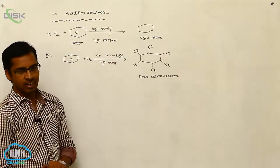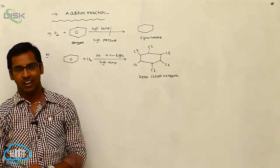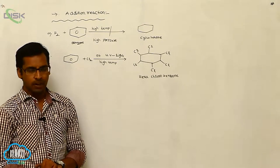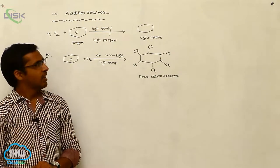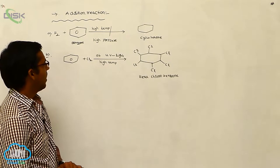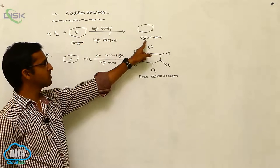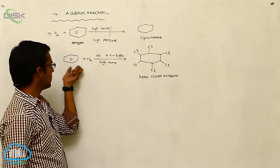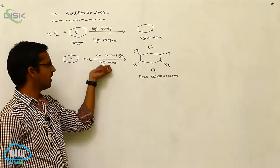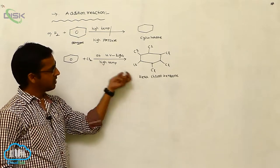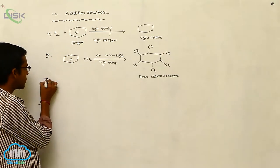In general, aromatic compounds do not undergo addition reactions at ordinary temperatures. However, benzene undergoes addition under drastic conditions: addition with H₂ at high temperature and pressure gives cyclohexane, and chlorination under ultraviolet light gives hexachlorobenzene.